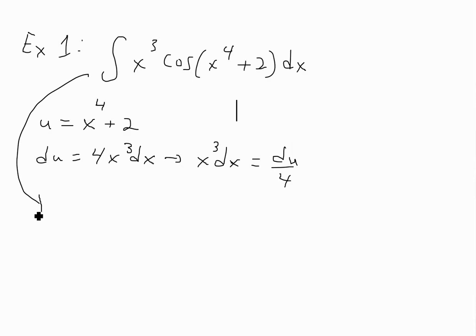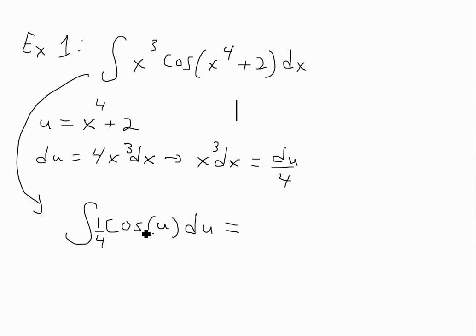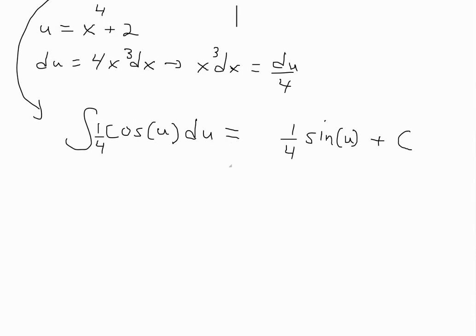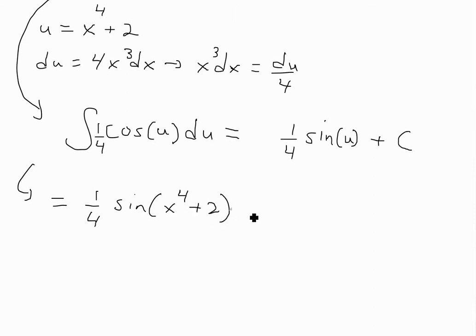Now we can plug everything in. We get the integral of cosine of u, and x cubed dx equals du over 4, so we write one-quarter in front. The antiderivative of cosine is sine, so we get one-quarter times sine of u plus a constant C. Substituting back, the final answer is one-quarter times sine of x to the 4 plus 2, plus C.